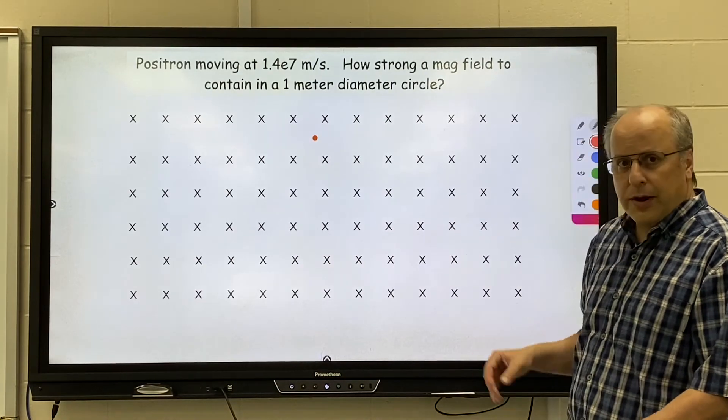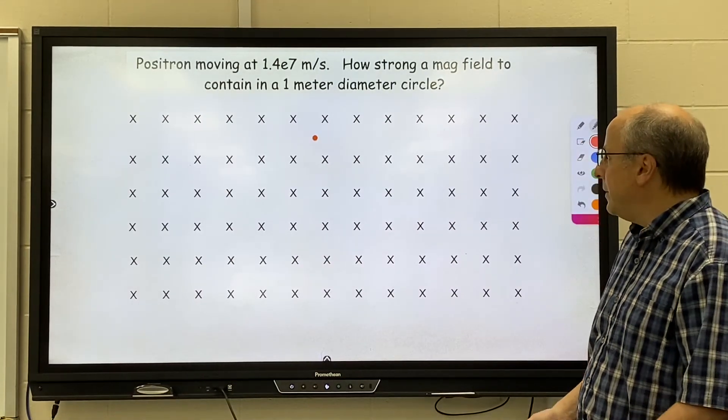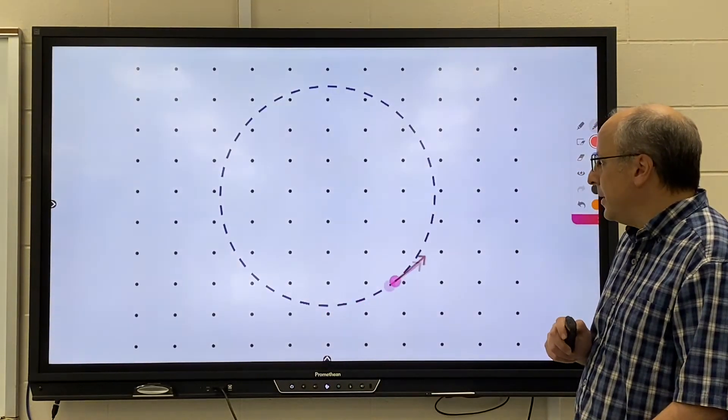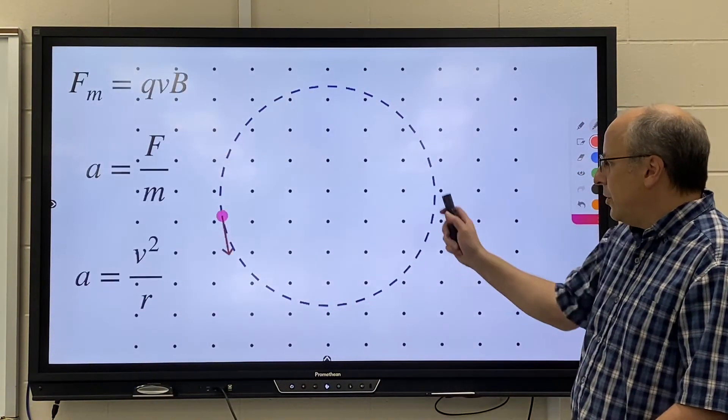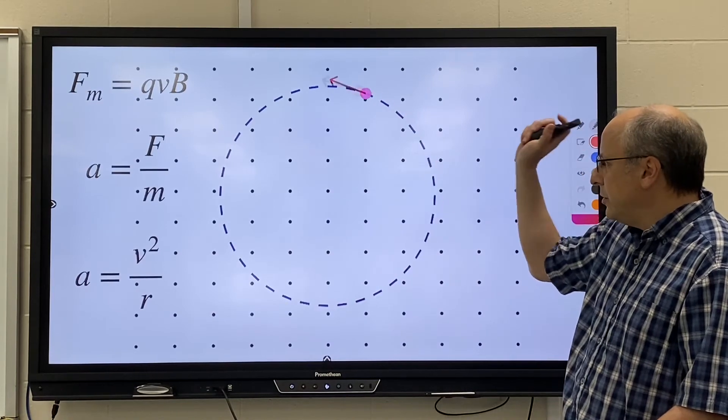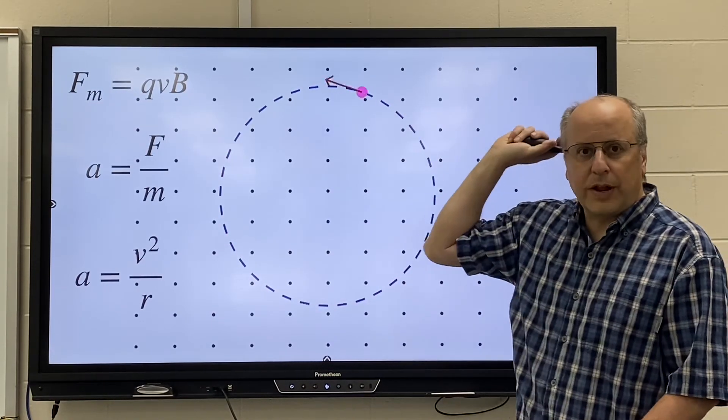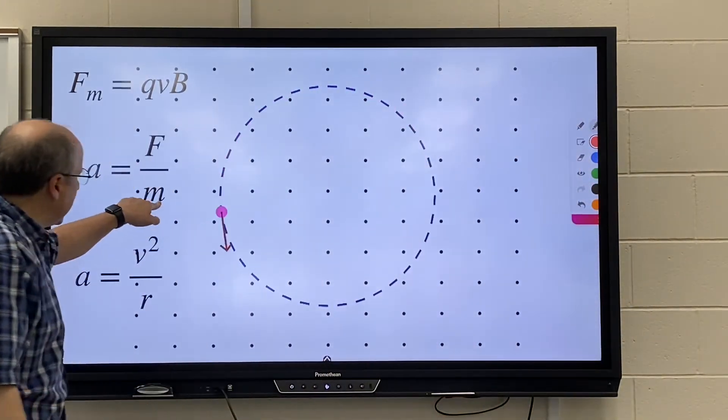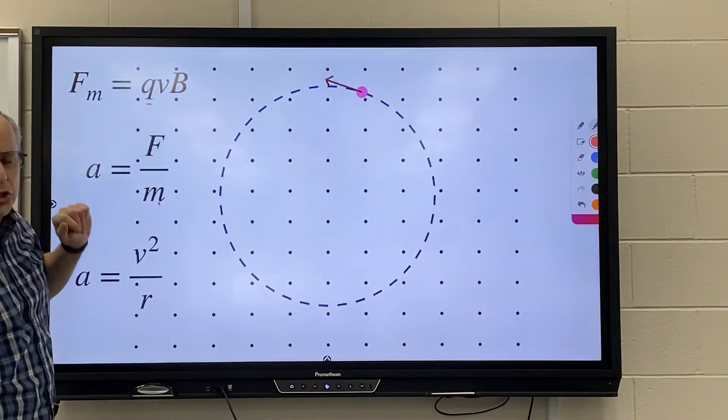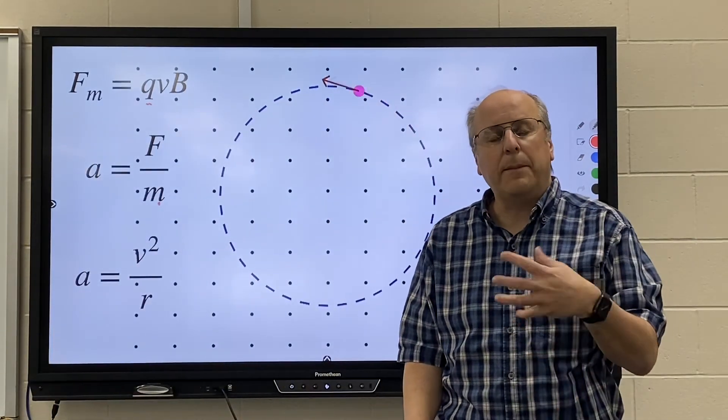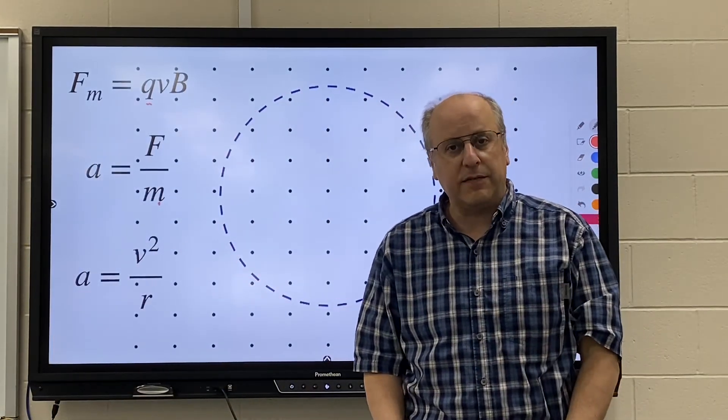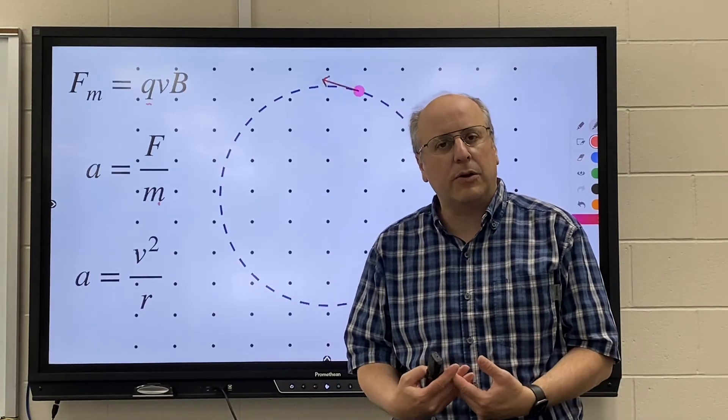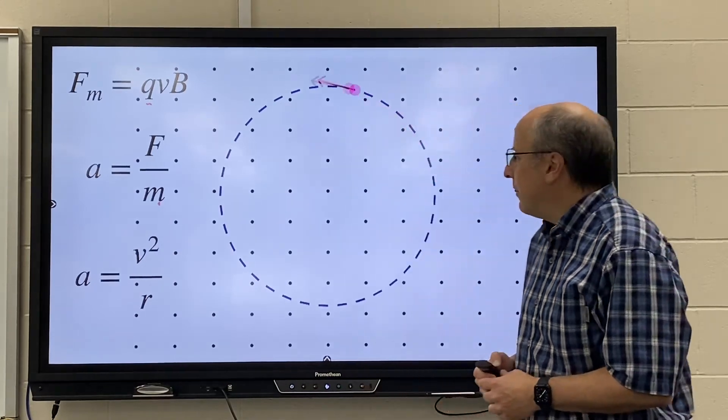So try that on your own and see if you can find the B value to track that particle. So you're going to work the formulas backwards. You're going to find the acceleration. You're going to find the force. You're going to find the strength of the magnetic field. Mass is the same as the electron. The value of the charge is the same as an electron. It's just positive instead of negative. The positive and negative don't factor into the mass, so don't even worry about it. All right.